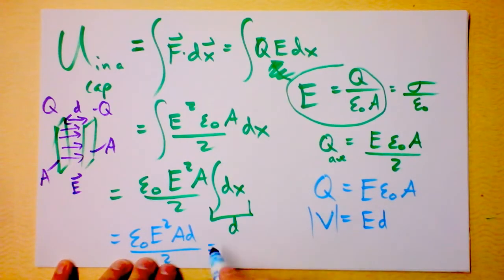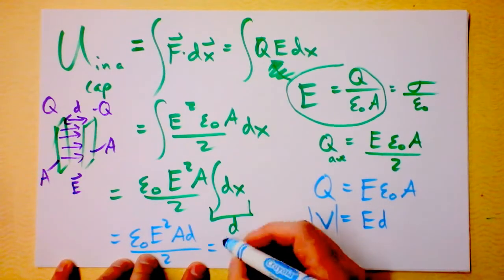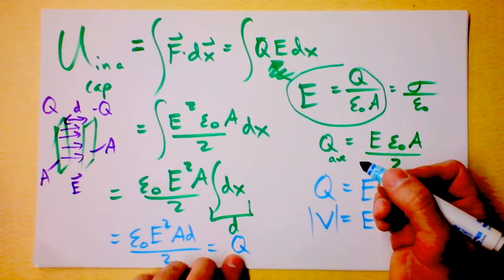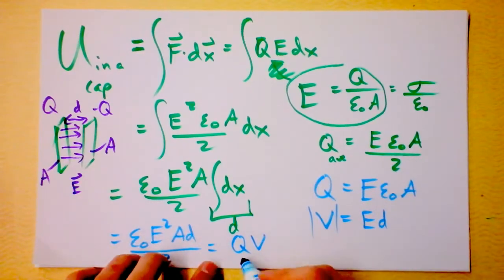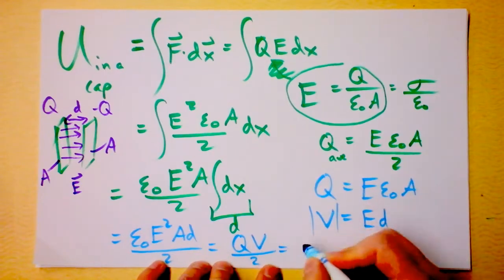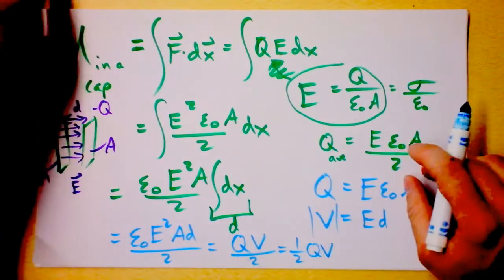This stuff is actually just, I see Q in here, epsilon naught, electric field, and area. And I see electric field times distance, and then the whole thing is divided by 2. So this is the charge on the plate of a capacitor times the voltage between the two plates of the capacitor divided by 2. We could also write it, this is the standard way of writing it, 1 half Q times V. That's the energy stored in a capacitor.